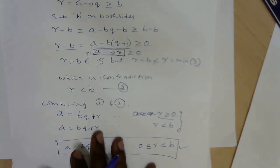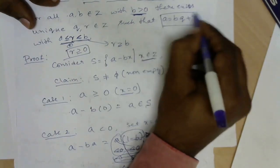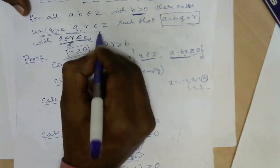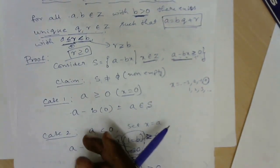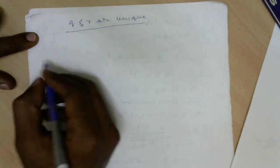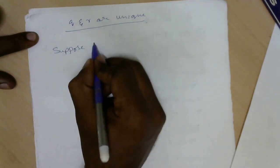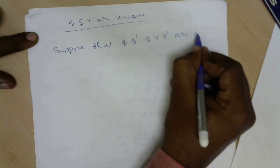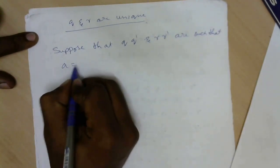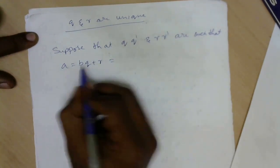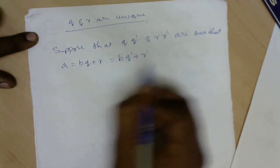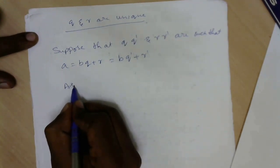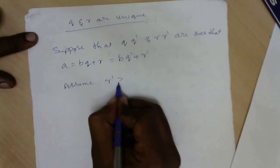Next we have to prove q and r are unique. Suppose q', r' are such that a equals bq plus r equals bq' plus r', and assume r' is greater than or equal to r.